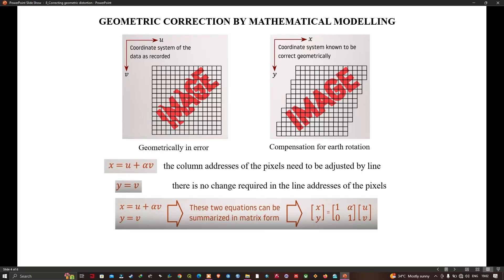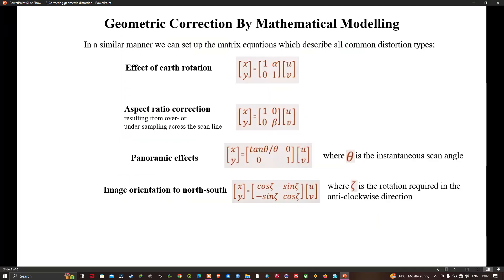If we examine the geometric characteristics of other distortion types, it is possible to set up similar equations as shown on this slide. The next step could be to use these relationships to create a geometrically correct image. That requires inverting them to root u and v in terms of x and y because the technique we are going to treat in the next video.